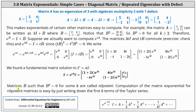Matrices B such that B to the power of k equals zero for some k are called nilpotent. Computation of the matrix exponential for nilpotent matrices is easy by just writing down the first k terms of the Taylor series.